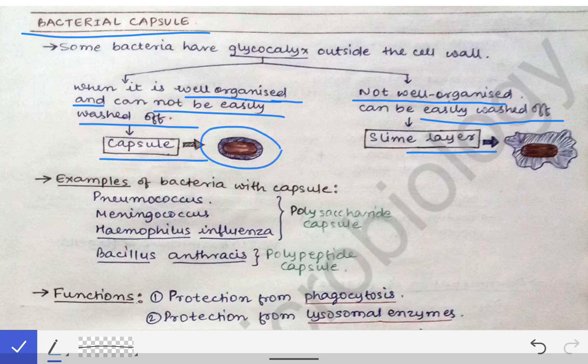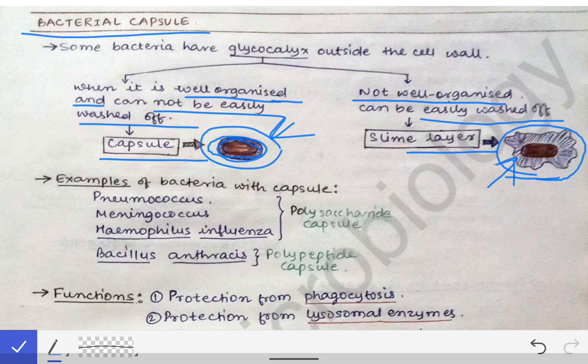When the glycocalyx outside the cell wall is well organized so that it cannot be easily washed off, it is called the bacterial capsule. Here the bacterial cell wall is completely surrounded by well-organized glycocalyx — that is the bacterial capsule. When the glycocalyx surrounds the cell wall in a haphazard, disorganized way and can be easily washed off, it is called the slime layer.